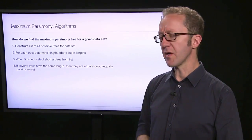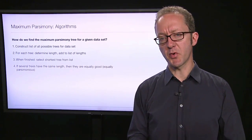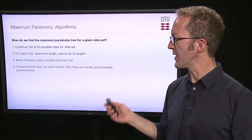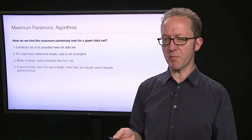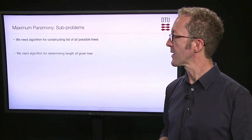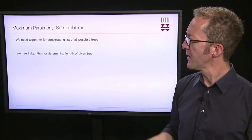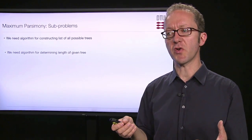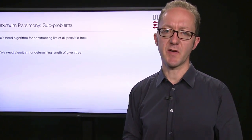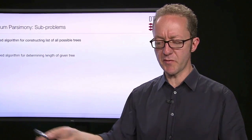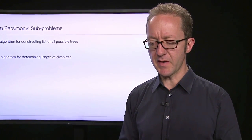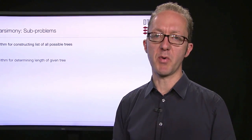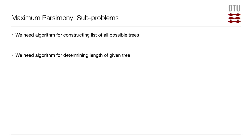This approach to finding a parsimony tree leaves us with a new set of sub-problems. First, we need an algorithm for constructing a list of all possible trees. How do we, for a dataset of 20 organisms, write up all the possible trees?